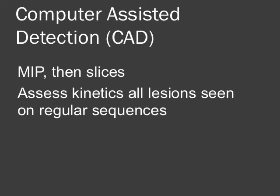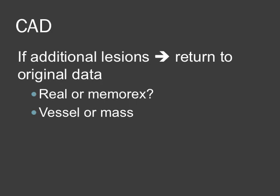I haven't mentioned looking at the kinetics of the enhancement yet, and we really like to do this right at the end to make sure we've looked through all the images and we're not biasing ourselves by looking at that kinetic study. I find it most helpful to look at the MIP images first and then look at the individual slices, looking for areas of enhancement. We're going to assess the kinetics of all the lesions we saw during our initial review of the gadolinium-enhanced sequences, and then also look out for any additional lesions. If we see additional lesions on the CAD images, we'll return to the original data and try to assess: is this real or artifactual? Is this a vessel, a mass, or a normal lymph node that we passed over on our initial review?